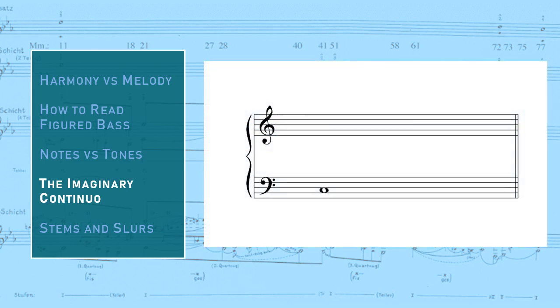This brings us to another Schenkerian concept called the imaginary continuo, which combines figured bass with the note versus tone distinction, and will provide a framework for understanding how analytic notation works. Here we have an unfigured bass note C. The figured bass realization of this C would be a C major triad, which would include the notes C, E, and G in some sort of configuration. But before the chord is realized by the continuo player, we don't know anything about the register or voicing of the chord.